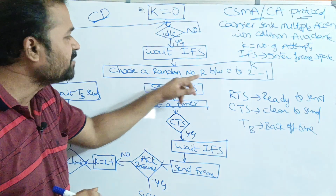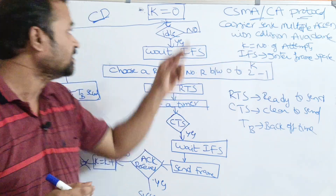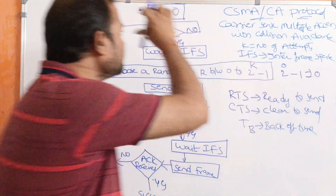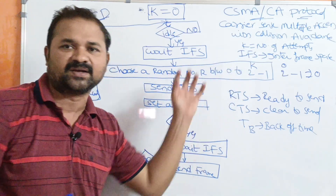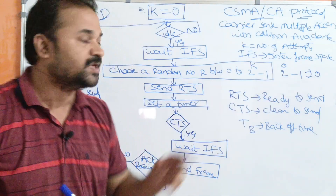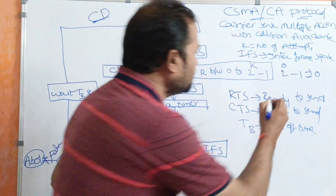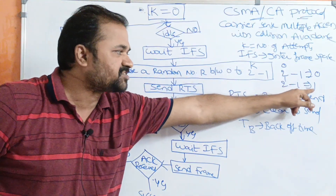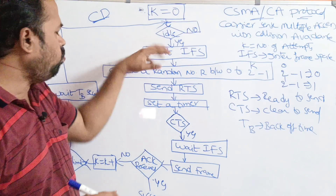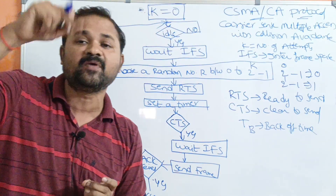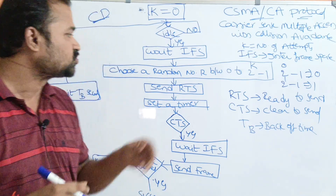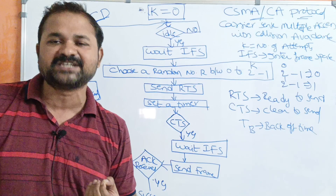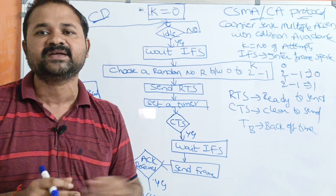The station chooses a random number between 0 and 2^K − 1. Initially K is 0, so 2^0 − 1 = 0, meaning no slot wait on the first attempt. On the next attempt K becomes 1, so 2^1 − 1 = 1 slot wait. When K is 2, 2^2 − 1 = 3 slot wait. So the station waits for IFS plus a random number of slots before transmitting.